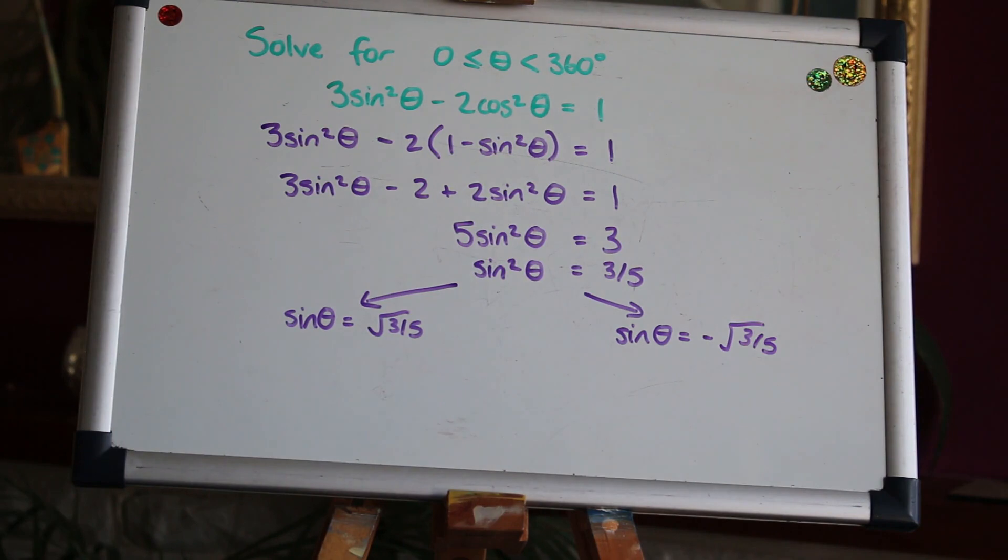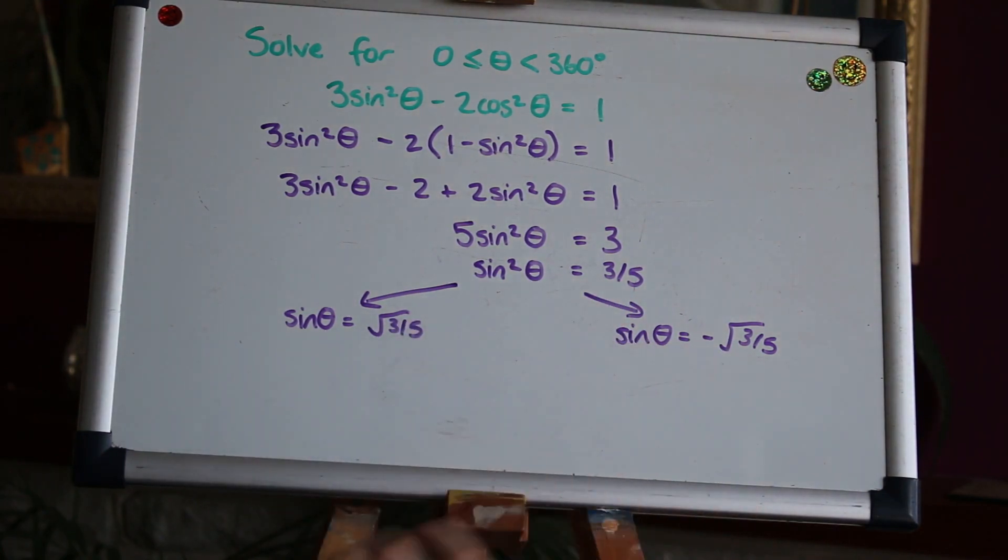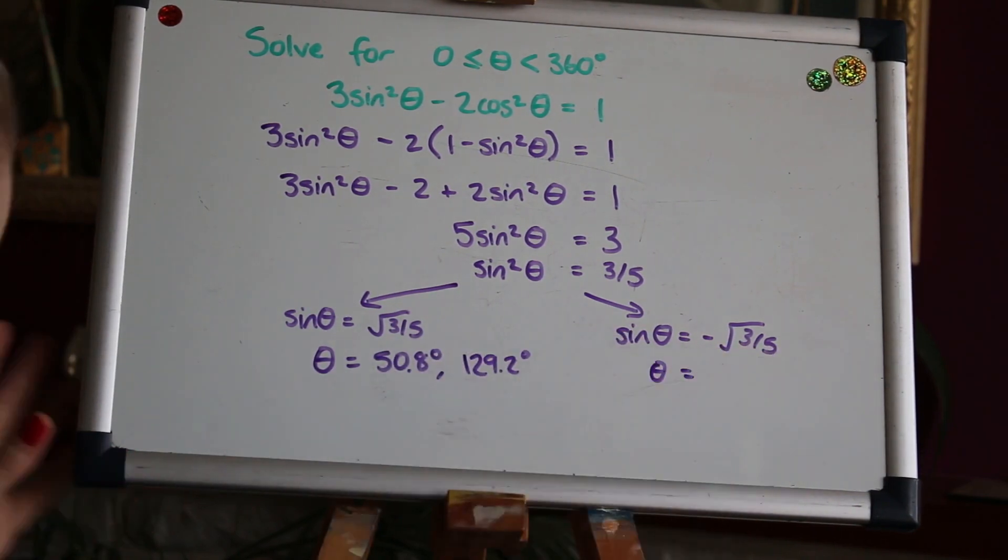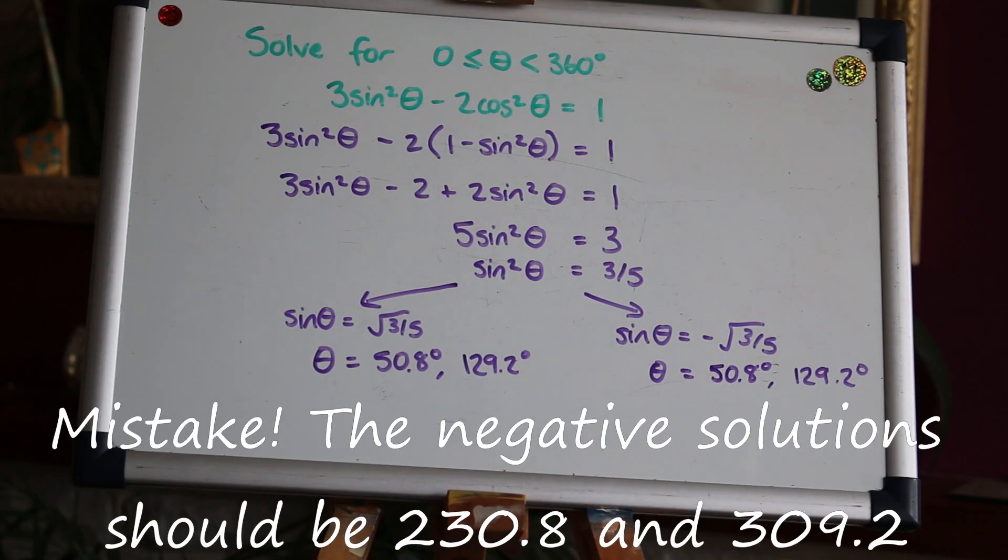Here could potentially trip a lot of people up if you don't remember that when you square root both sides of the equation you'll get a positive and a negative result. So that's going to give us different solutions which I'm going to solve separately. Fab! Well done if you're starting to get those. Keep on practicing. Plenty of questions.